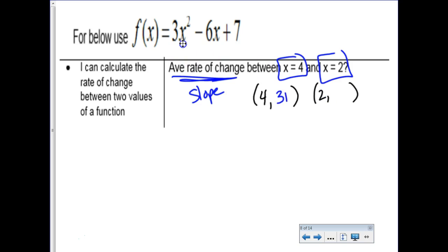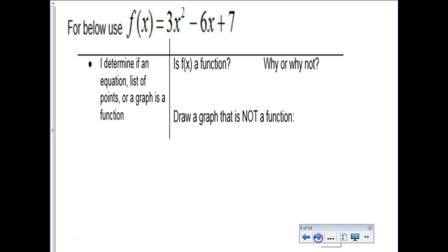So finding the average rate of change, which we know is just finding slope, would be 7 minus 31 over 2 minus 4. I did that in a weird order, but what's new? What is that? Negative 24 over negative 2, which reduces to a wonderful 12. Average rate of change is 12 between x equals 2 and x equals 4.